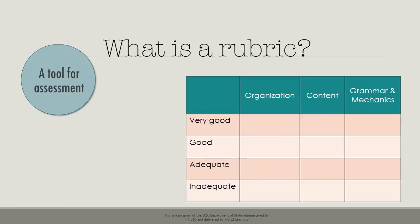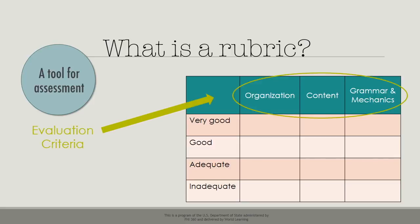A rubric specifies first what is being evaluated — these are the evaluation criteria. For example, when grading an essay, a teacher might choose to focus on the organization of the essay, the content, and the grammar and mechanics.